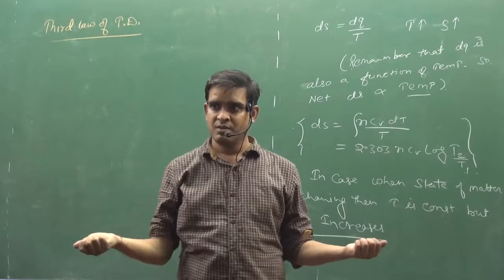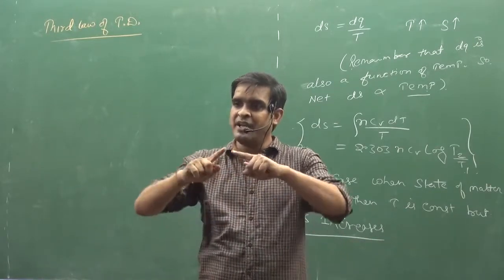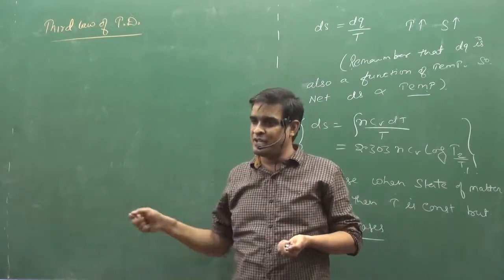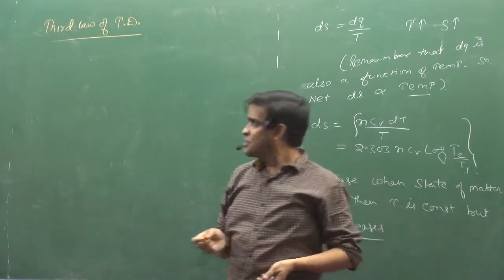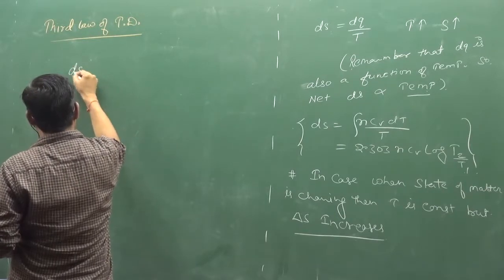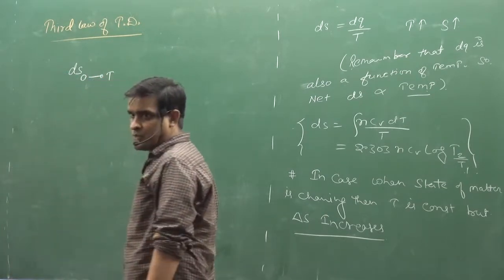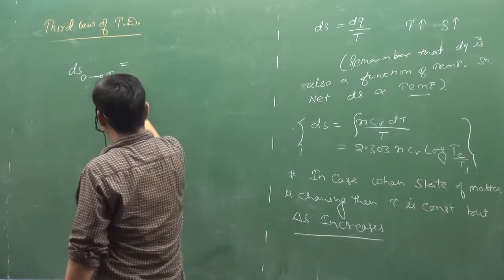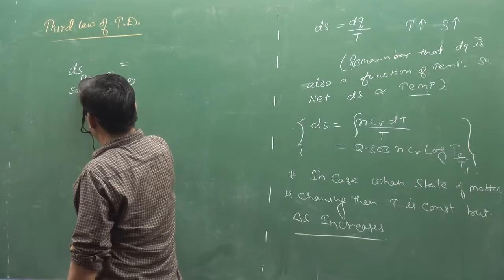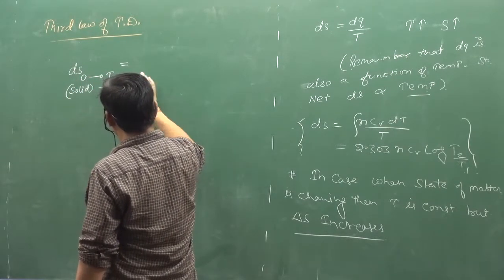At T = 0 Kelvin, S = 0. We believe that. So if we take any substance from zero Kelvin to T Kelvin, and it has changed state — solid to liquid, liquid to vapor — think about how many changes will happen.